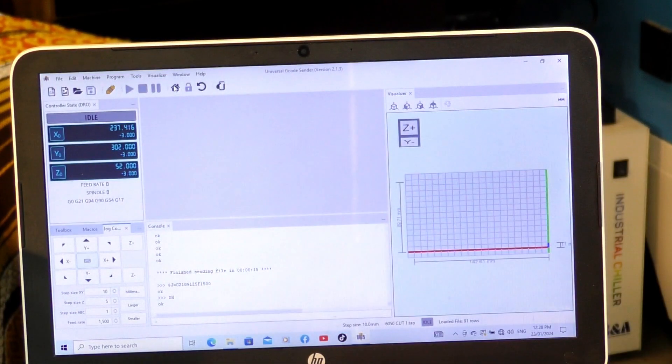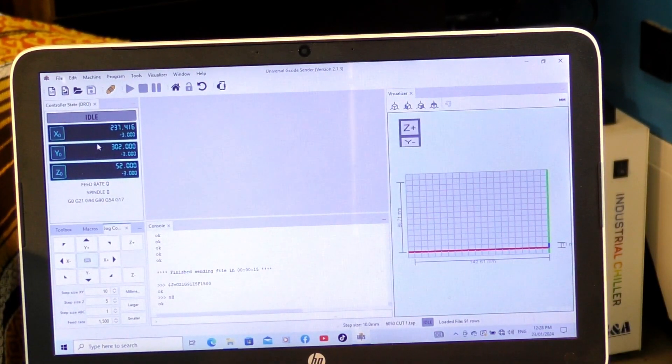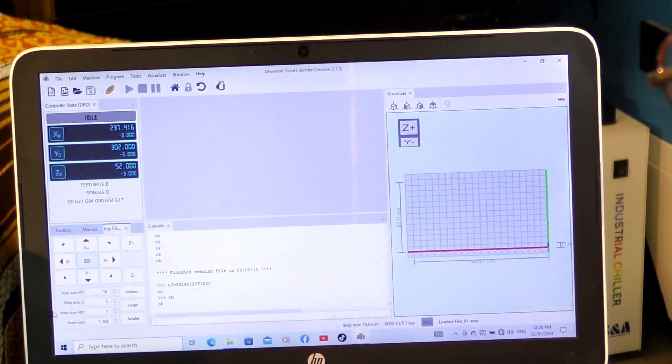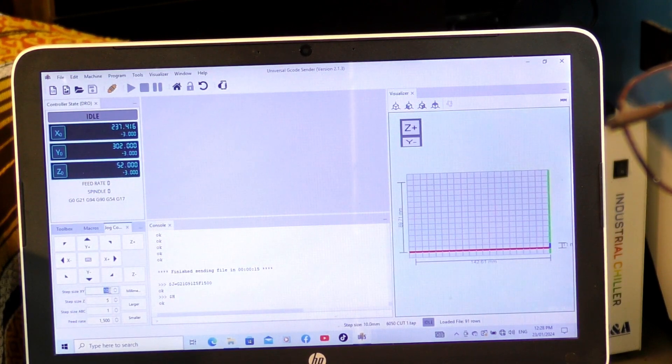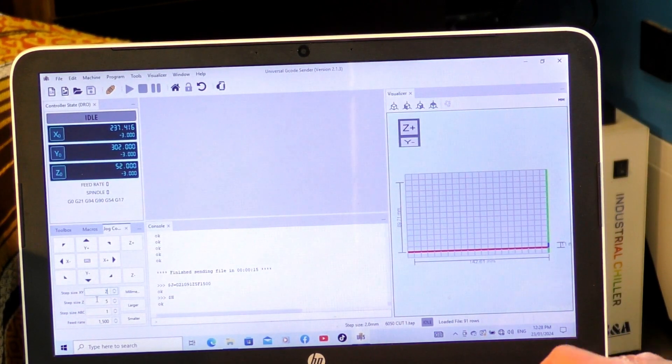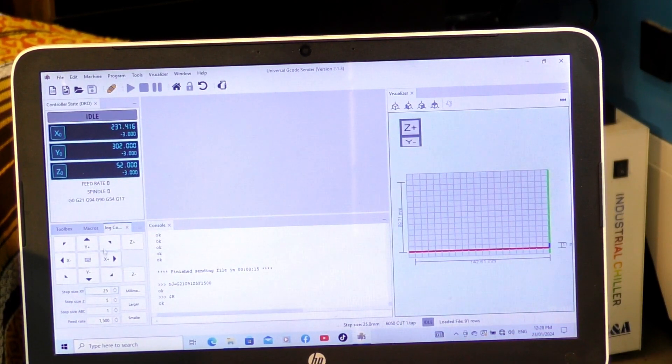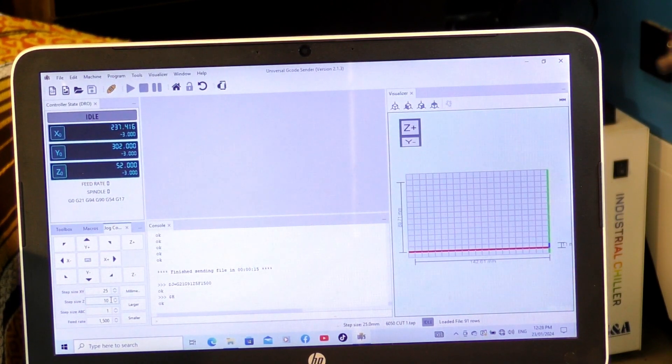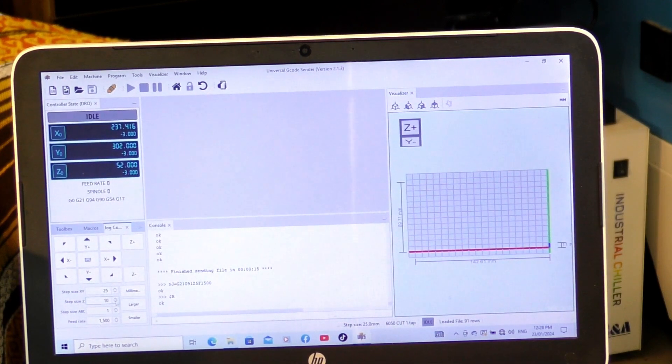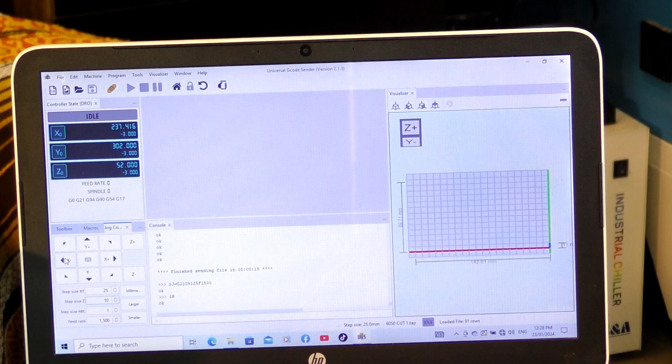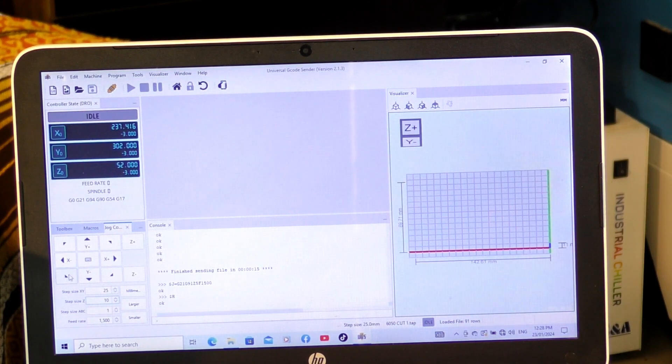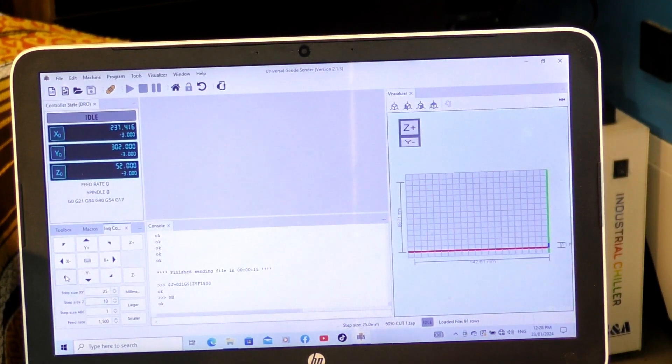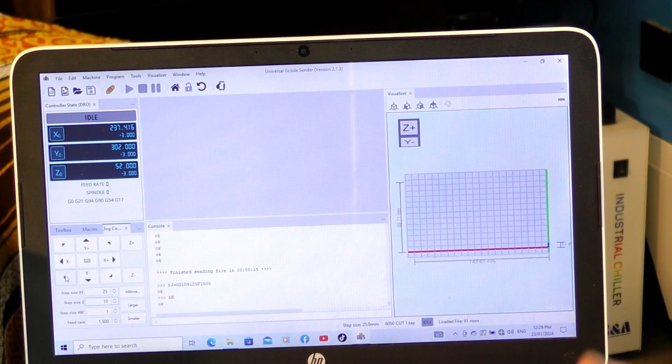So now I'm going to raise up the jog. I think 25 millimeters will be fine—that's per press of each one of these arrows for the X and Y. And I think we'll go 10 millimeters at this stage for the Z. So now by using these arrows, I'm going to move the X and the Y together, and I'll bring it over and we're going to register the zero-zero or the start of the work of our project.